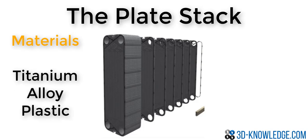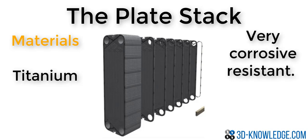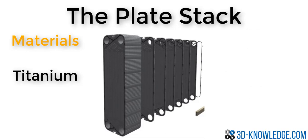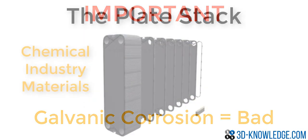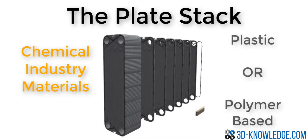The plates themselves can be manufactured from a number of different materials, ranging from titanium to different alloys, as well as plastics. Titanium is chosen whenever the environment is particularly corrosive, as it has excellent corrosion resistance — but it's incredibly expensive. Another disadvantage with titanium is that any metal connected to it will act as an anode due to galvanic action; when two dissimilar metals are connected, one is the anode and one the cathode, and the anode slowly wears away. Protection can be achieved by insulating the plate from the dissimilar metal or by installing a cathodic protection system. For some chemical processes, the plate will be constructed of plastic or a polymer-based material.